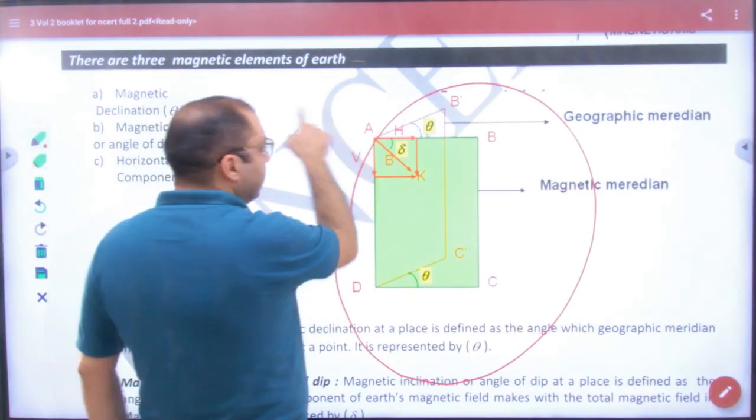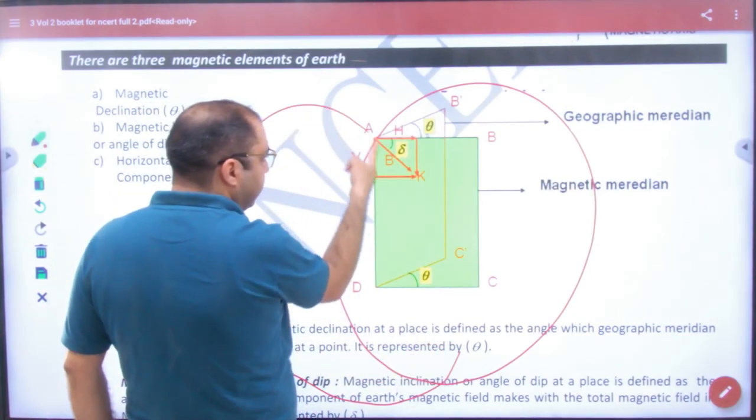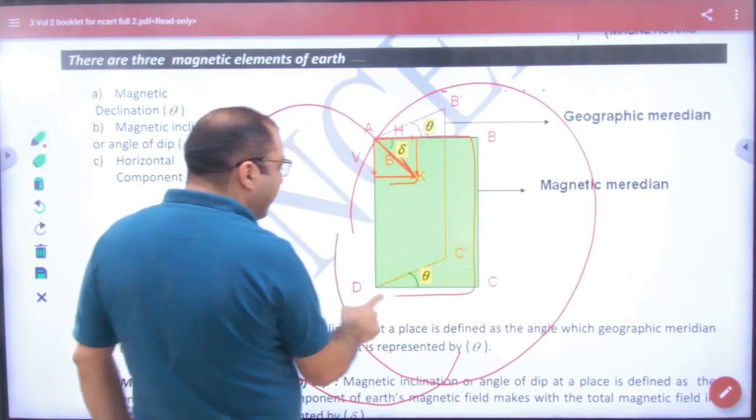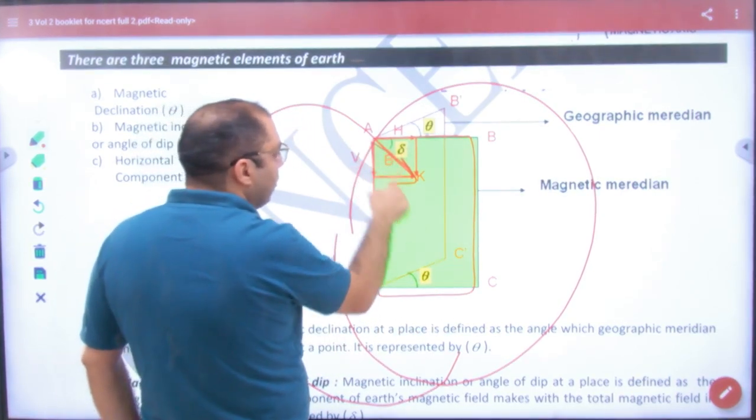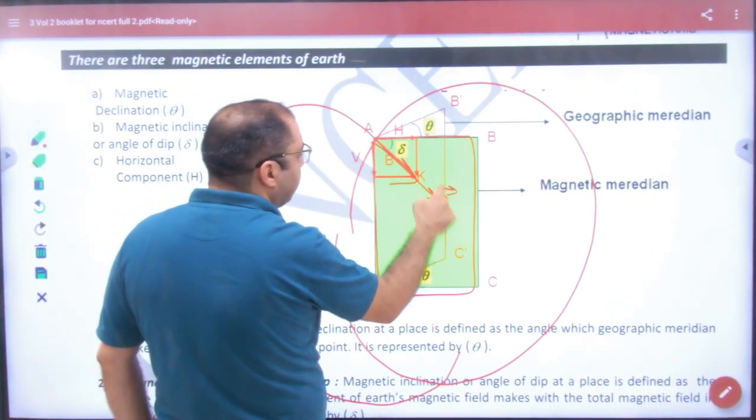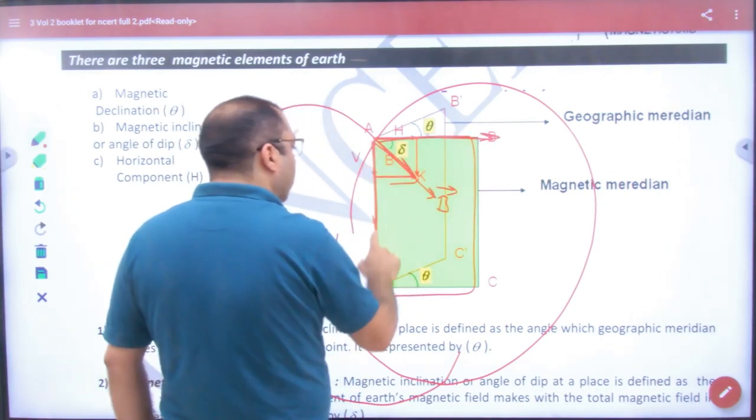such that the line comes down and enters this way. So you have made an imaginary meridian, a magnetic meridian, with two components of B-vector: one horizontal and one vertical.